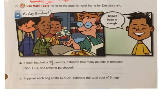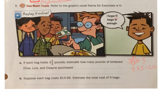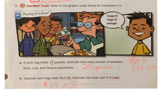Number 7: They're buying birdseed and bought 5 bags. Each bag holds 3 and 3/4 pounds — estimate how many pounds they purchased. 3 and 3/4 times 5: 3/4 is almost a whole, so I'll round to 4. 4 times 5 equals 20, so they purchased about 20 pounds. For part B: each bag costs $14.99 and they bought 5 bags. $14.99 is so close to $15, so $15 times 5 equals $75.